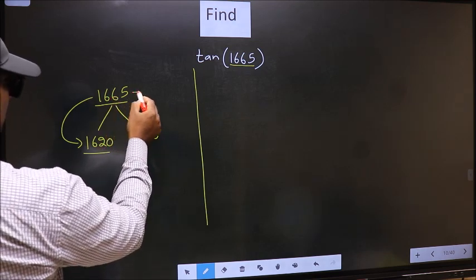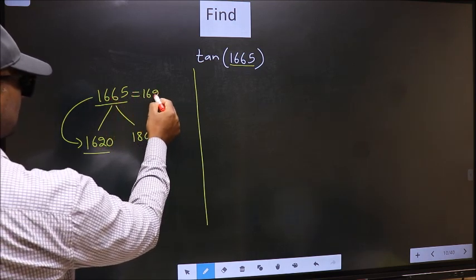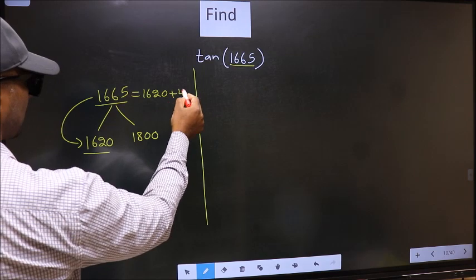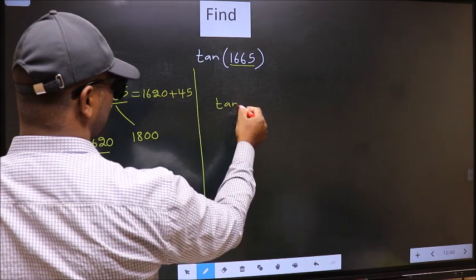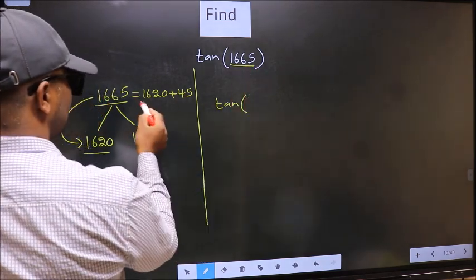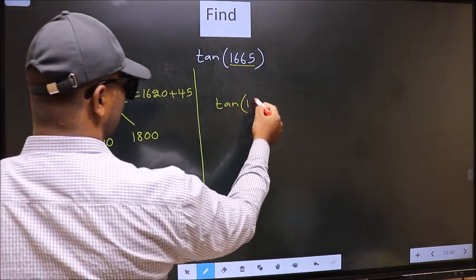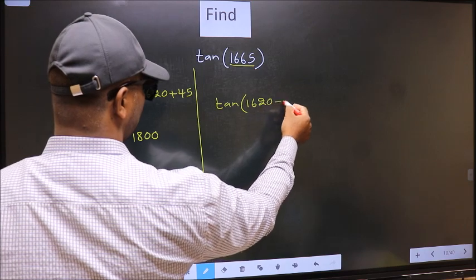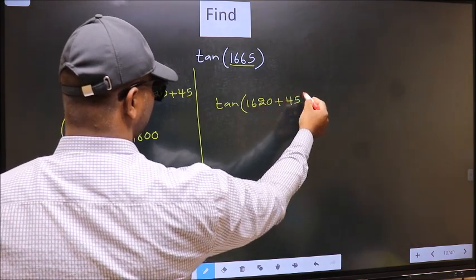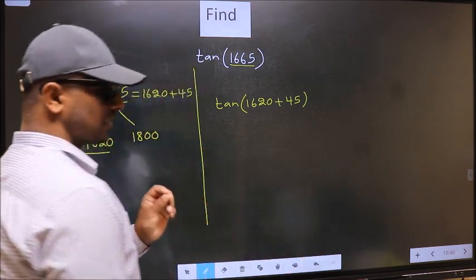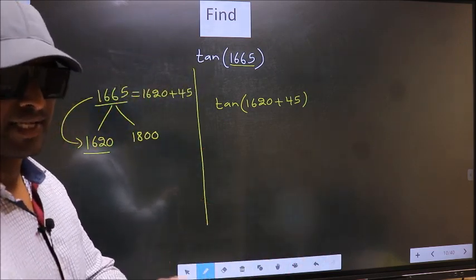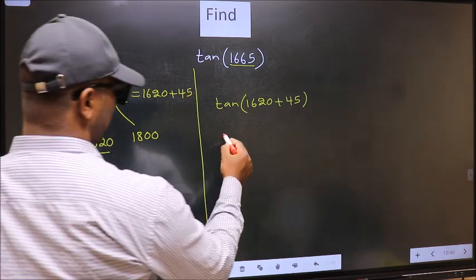So in place of this, we now write 1620+45. This will become tan(1620+45). This is your step one.